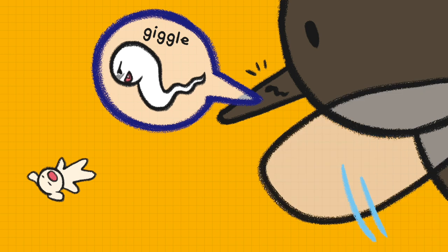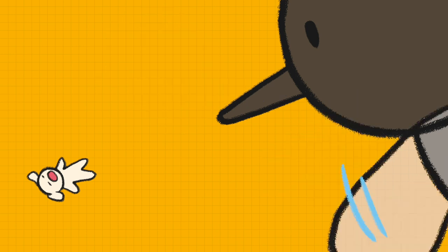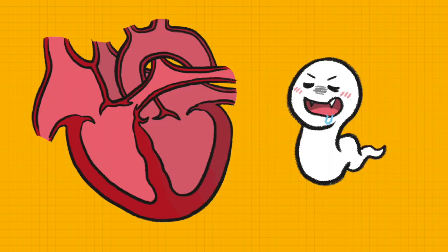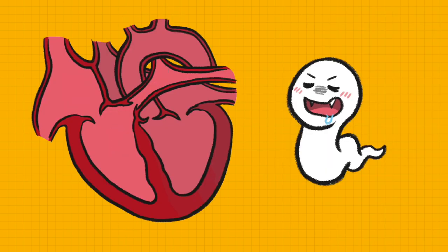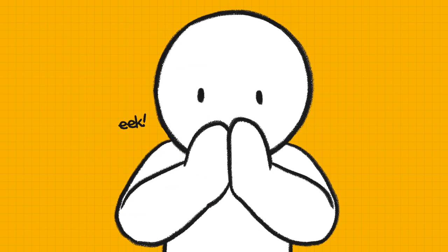Microfilariae grown in the dog's bloodstream live in the pulmonary artery and heart. Adult female heartworms can even reach about 10 to 12 inches long.